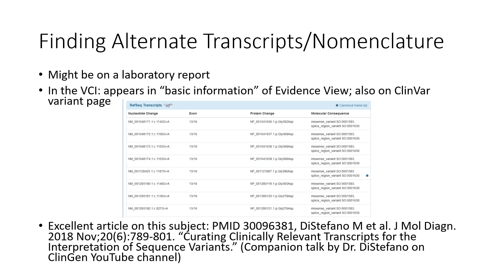You might be able to identify alternate transcripts or nomenclature on a laboratory report, in ClinVar, or for bio curators working in the variant curation interface, this information may also appear in the evidence view. I'll also direct you towards Dr. Marino DiStefano's excellent article and talks on alternate transcripts on the ClinGen YouTube channel for more information on this topic.